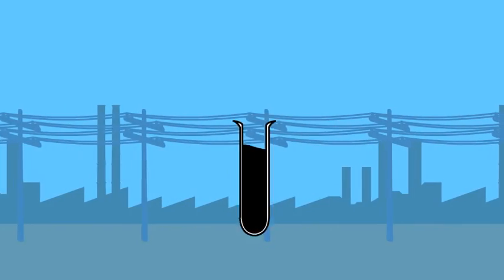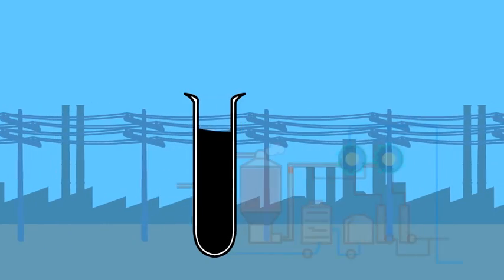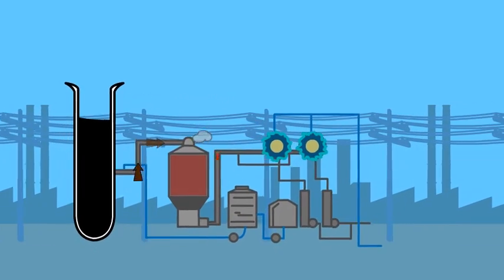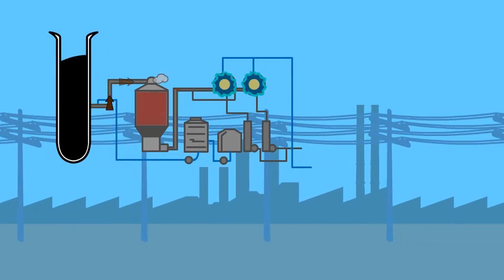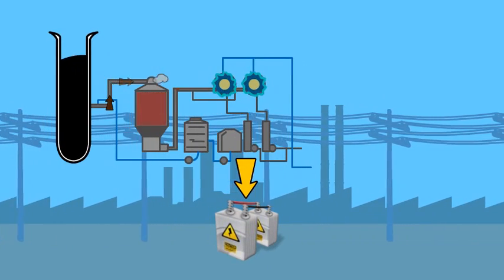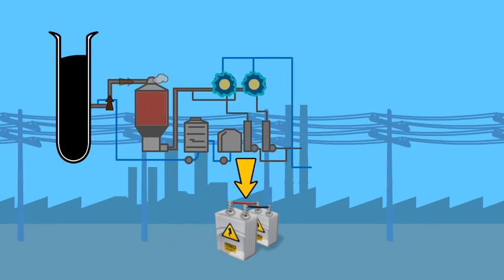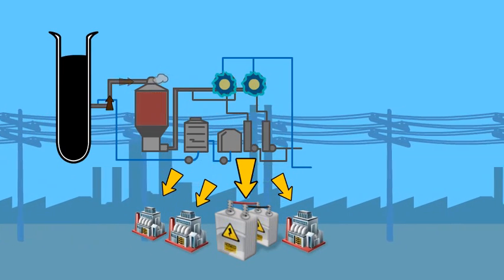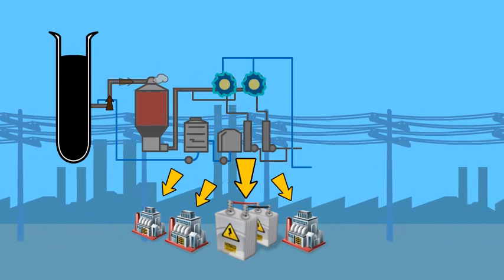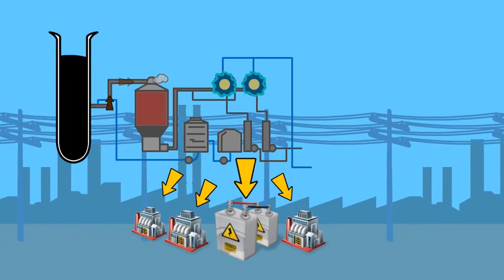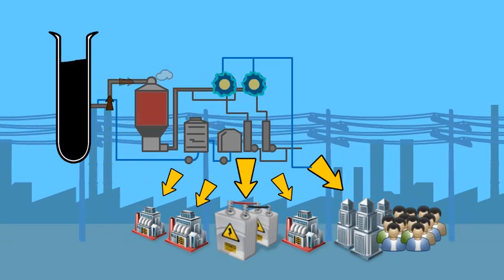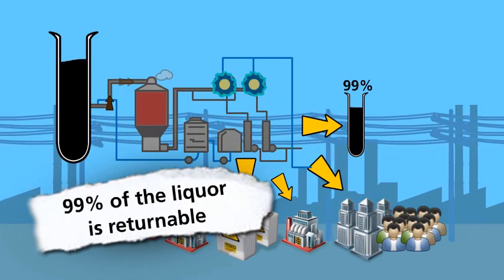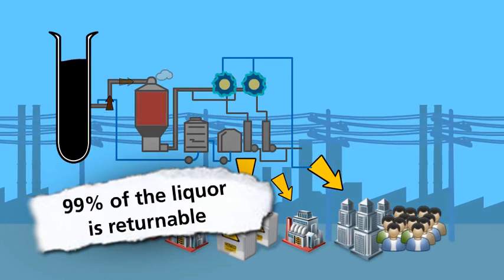It is worthy of note that the black liquor is sent to the chemical recovery process and burned in a boiler to generate steam and electricity to make the unit self-sustained in energy, in addition to providing power to other neighboring industrial operations and selling enough power to the national grid to supply a city of 96,000 inhabitants. Ninety-nine percent of the liquor returns to the cooking process.